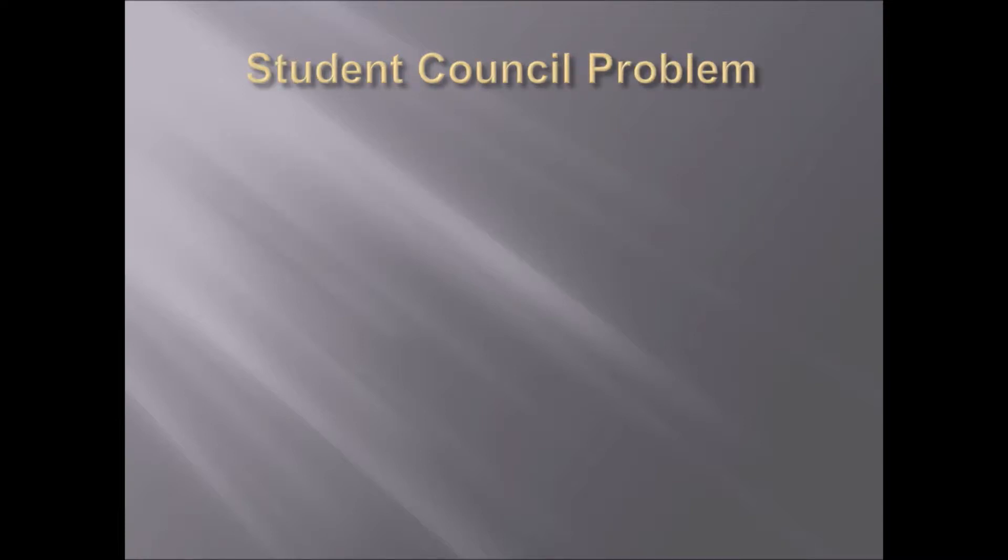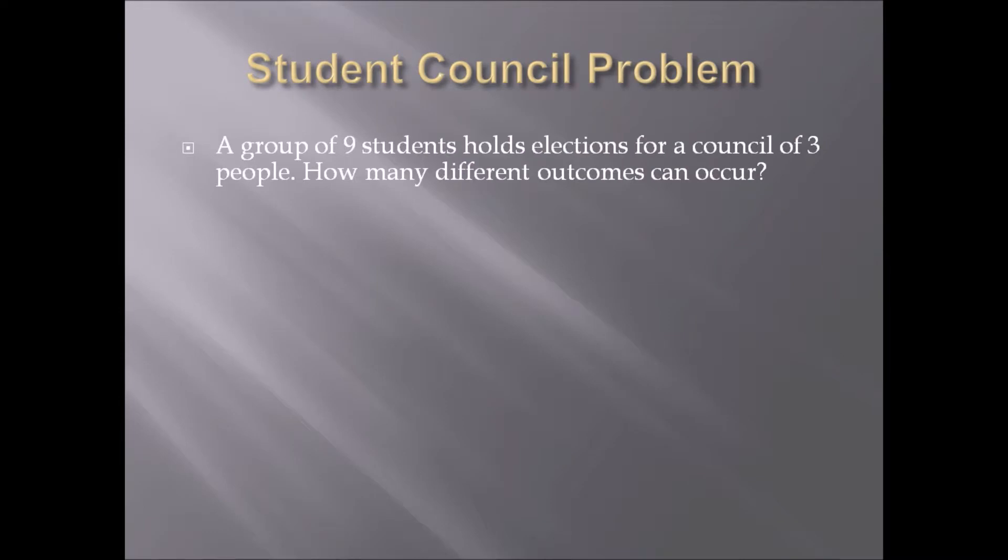That's what a bitstring is. Now I want to move on to a student council problem. If you remember our last video, we had an election of students for president, vice president, and treasurer. Now, a group of nine students is holding an election for a council of three people. How many different outcomes can occur?